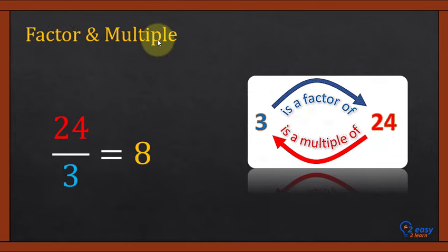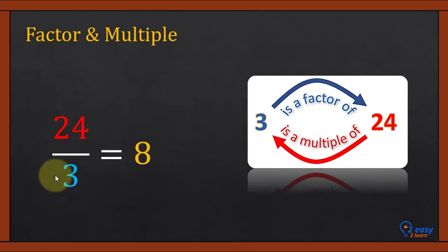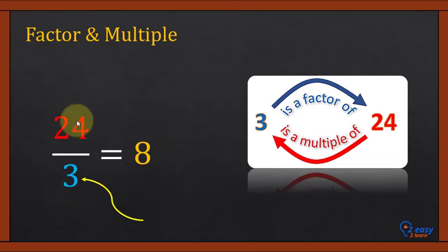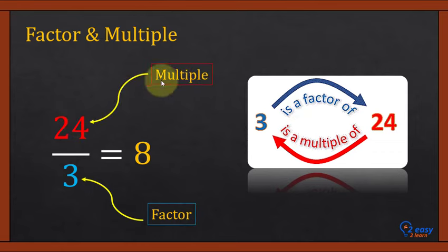Relationship between factor and multiple: 24 divided by 3 equals 8, so 24 is completely divided by 3, meaning 3 is a factor of 24. Also, 24 is in the table of 3 — we can say we multiply 3 by 8 to get 24, so 24 is a multiple of 3. Therefore, factors and multiples are related to each other.